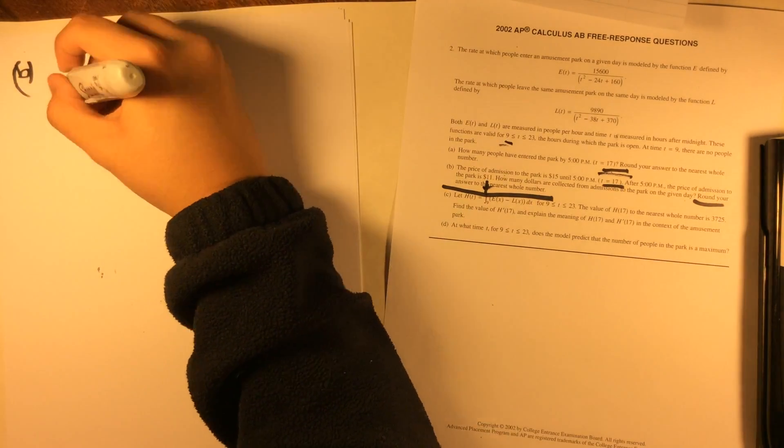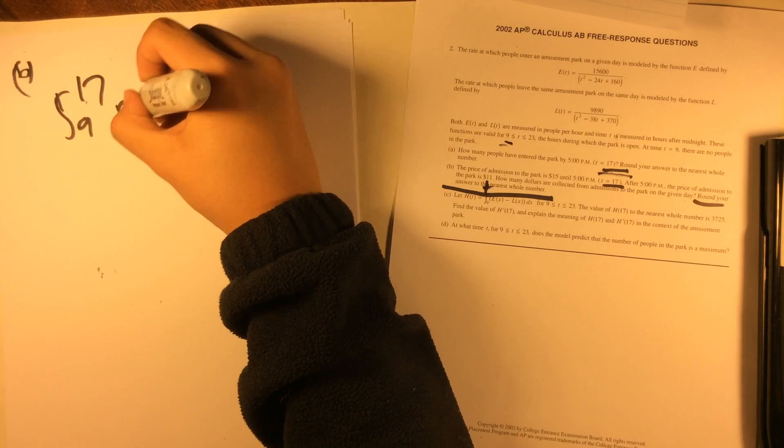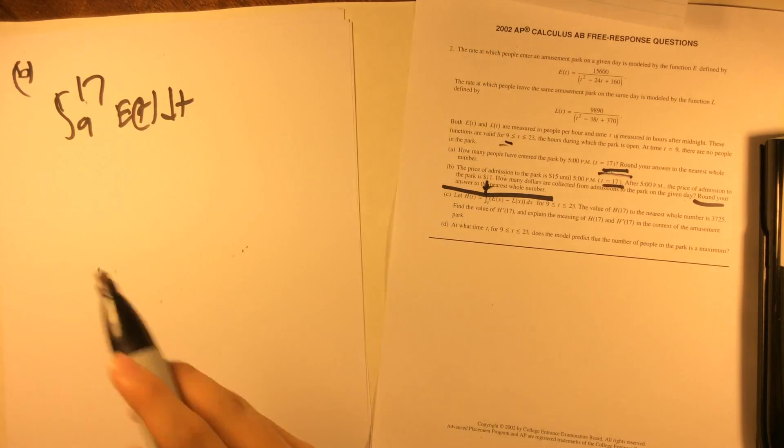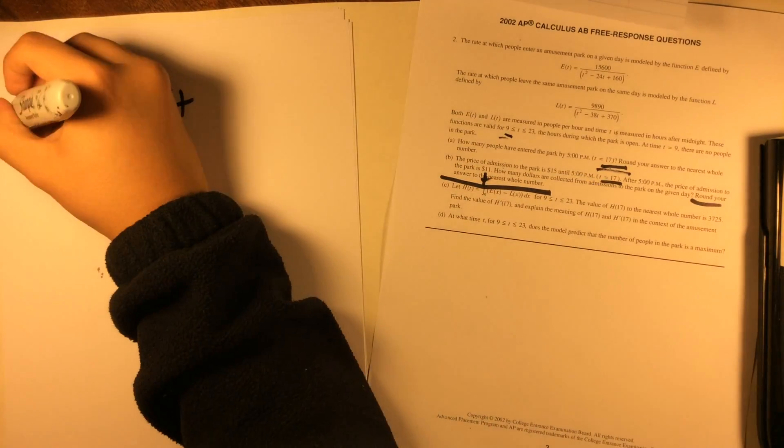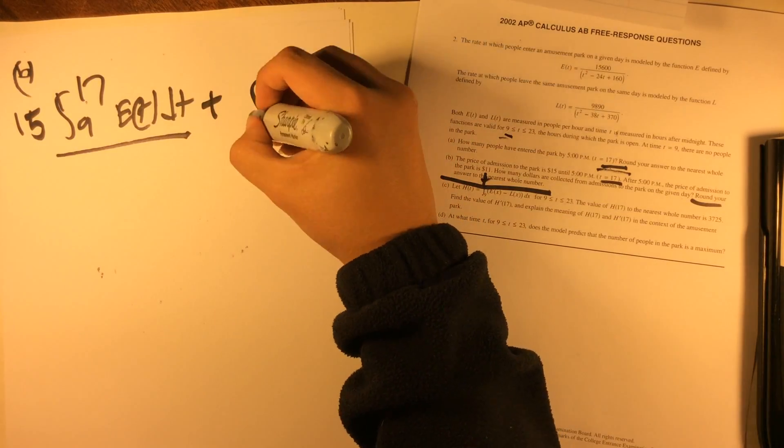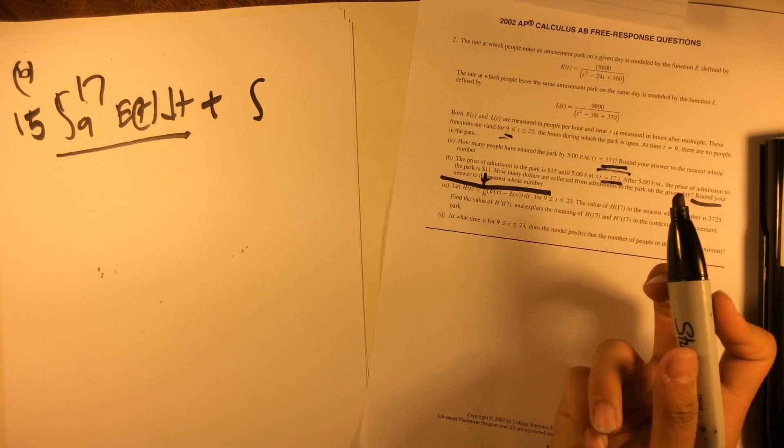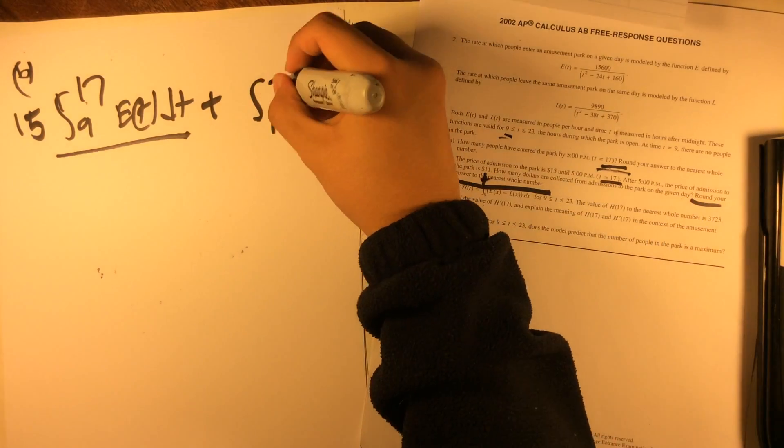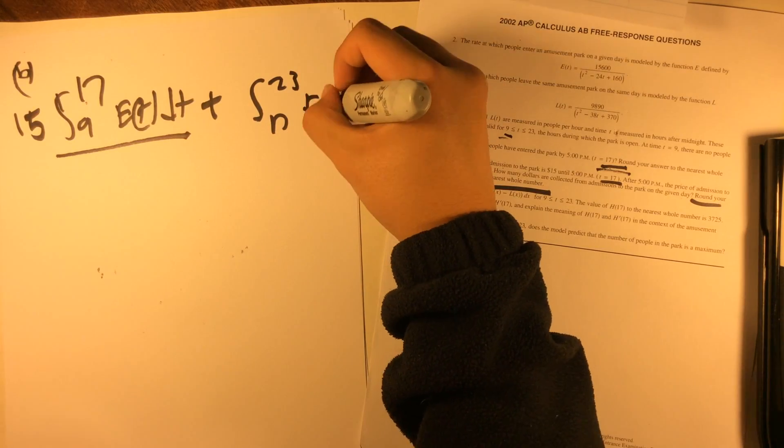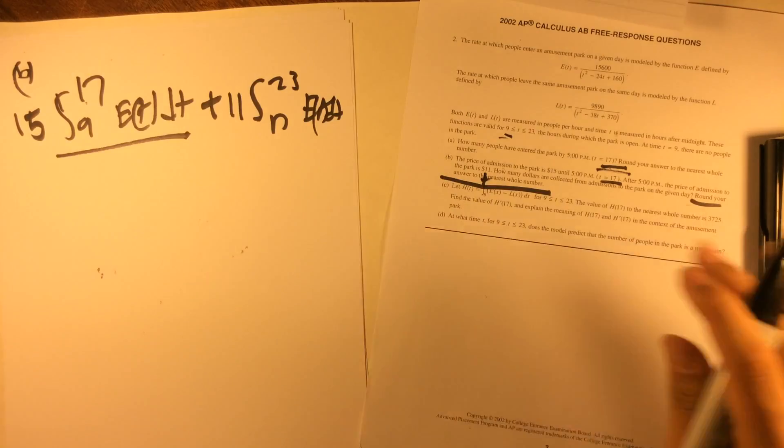Basically, it's just integral from 9 to 17 of E(T) dT, this is the number of people at the 15 dollar rate, so we multiply that by 15. This is the number of people, plus the integral of the people that have entered the park from 17 to 23 of E(T) dT. These go at the discount of 11 dollar rate.